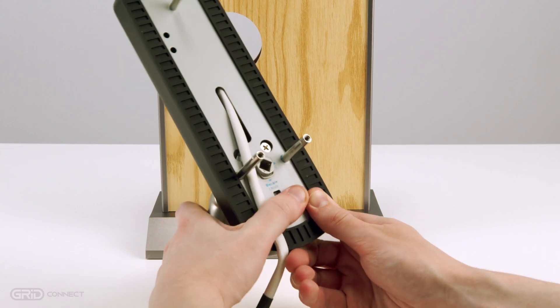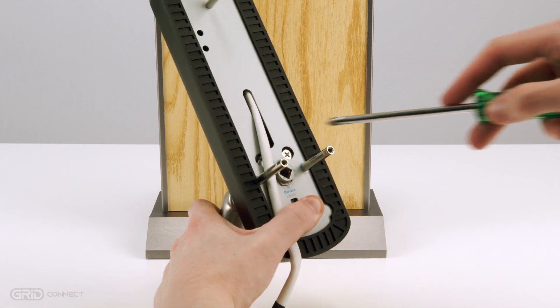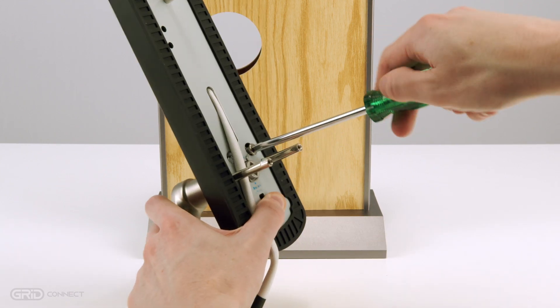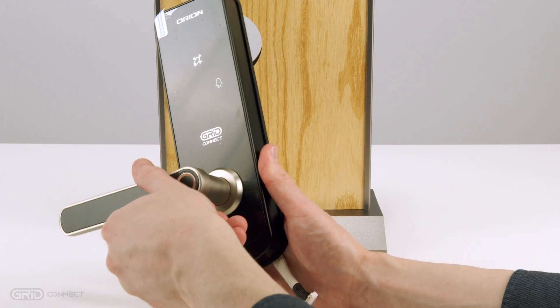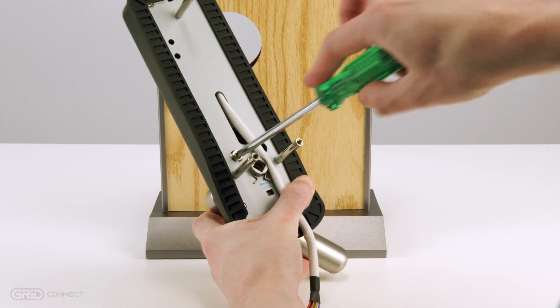If you have a left hinged door, take the front panel and pull the handle down to reveal a screw on the back and then remove it. Rotate the handle up and to the opposite side and then replace the screw.